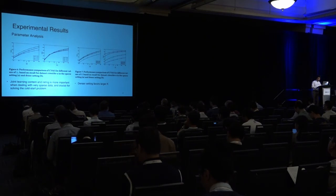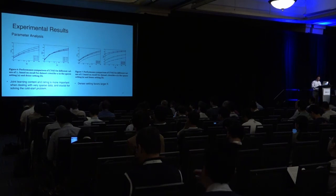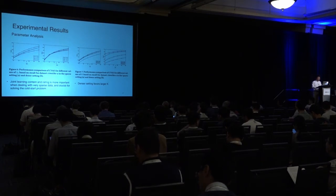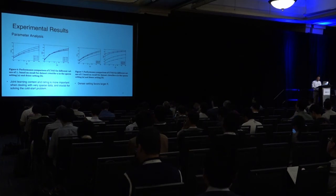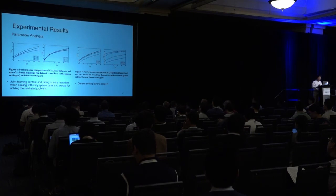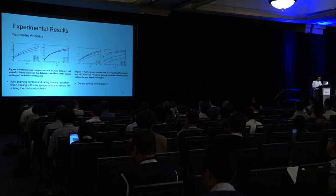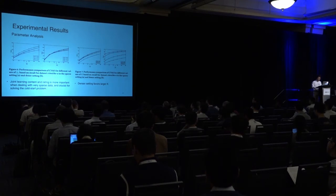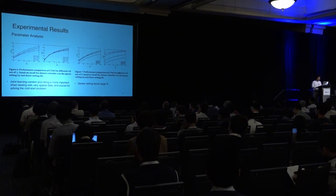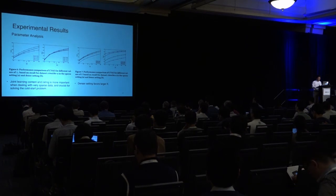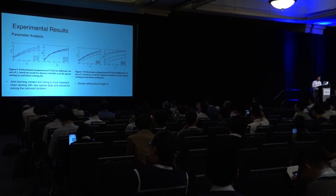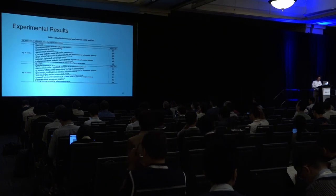We also investigate the difference between focusing more on content versus ratings. We put a ratio λ_r on the reconstruction term — the smaller λ_r, the more degraded the reconstruction performance. The conclusion is that in the sparse setting, it is better to focus more on the content part, because there is not much information to extract when the rating matrix is very sparse. On the right, we show performance variation with latent dimensions — generally, denser rating matrices favor larger latent dimensions.